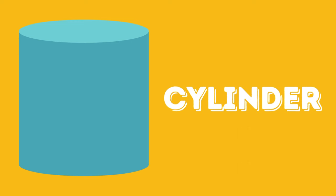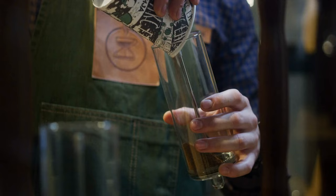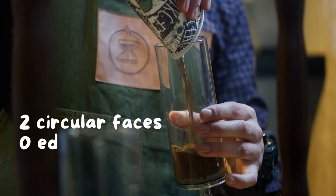This is a cylinder. It has 2 circular faces at each end, but it has no edges or vertices.